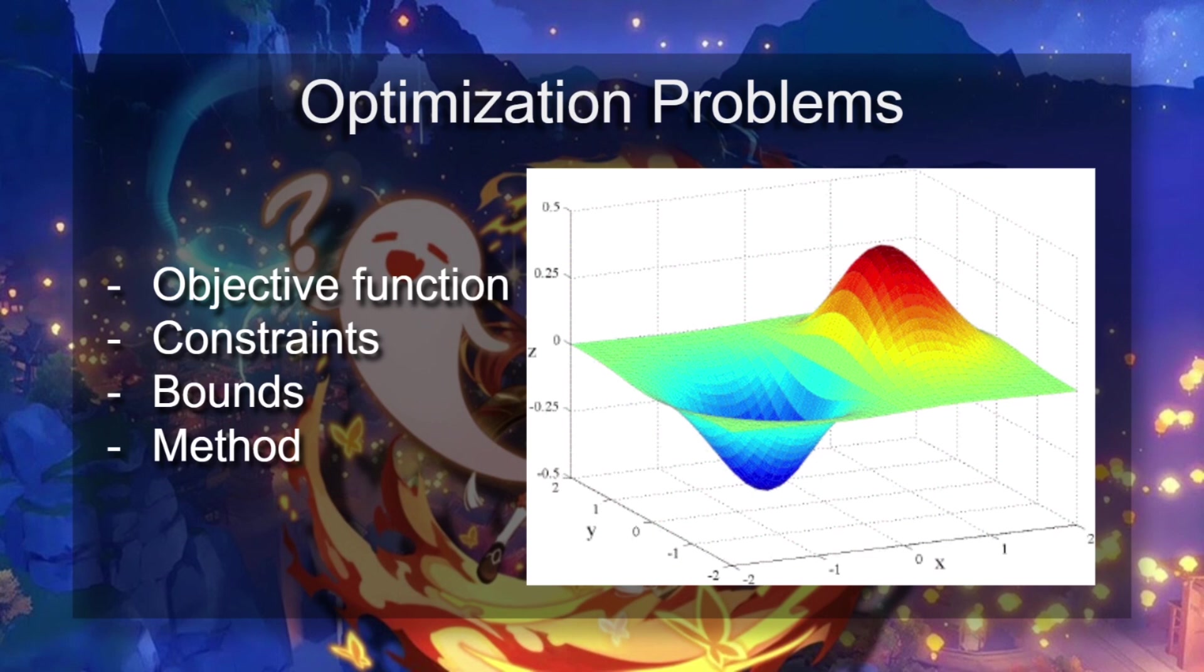What we need is an objective function, which for us is going to be the damage formula. Then we need to define constraints for it. We only have one main constraint, and then there's bounds, which are kind of like constraints too, but that's effectively the region where we can have the variables go between. And then we're going to talk about the method that we're using here.